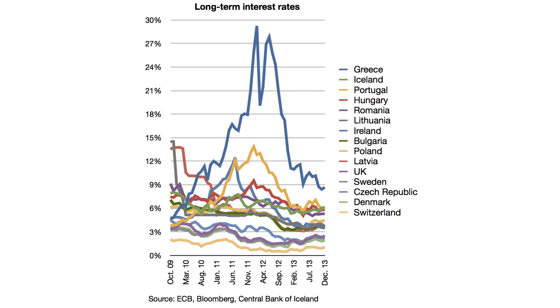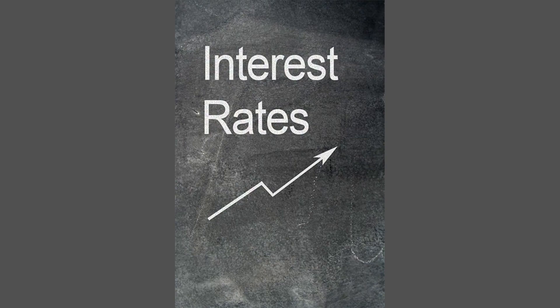Interest rates work by incentivising lenders to lend money and borrowers to borrow money. When interest rates are low, it is cheaper for borrowers to borrow money and they are more likely to do so. This, in turn, stimulates economic growth and encourages spending. On the other hand, when interest rates are high, it is more expensive for borrowers to borrow money and they are less likely to do so. This can slow down economic growth and discourage spending.